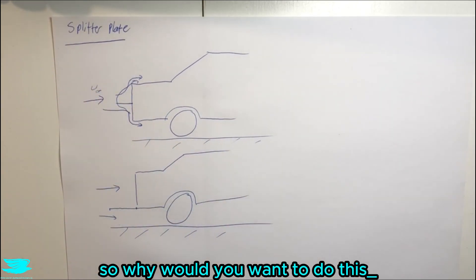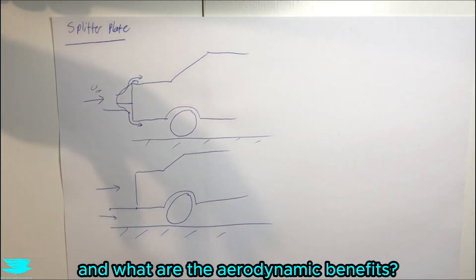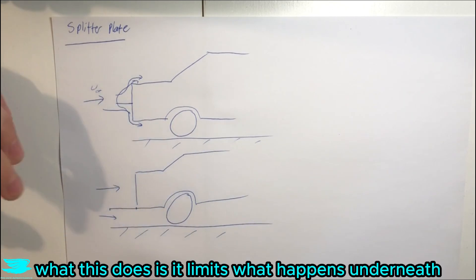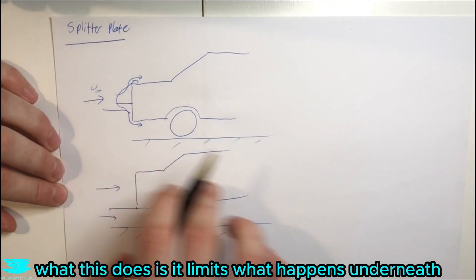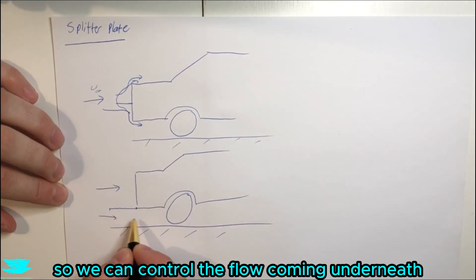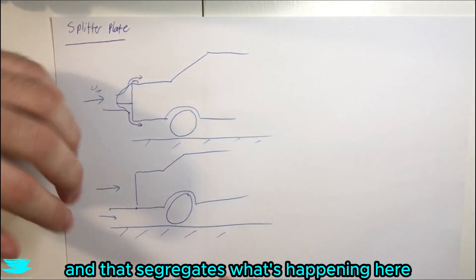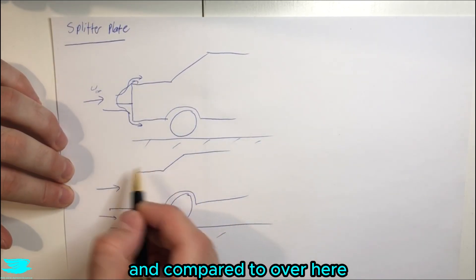So why would we want to do this, and what is the aerodynamic benefit? So mainly what this does is it limits what happens underneath, so we can control the flow coming underneath, and that segregates what's happening here and compared to over here.